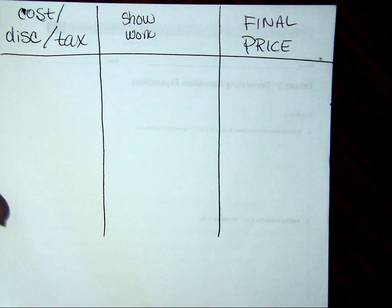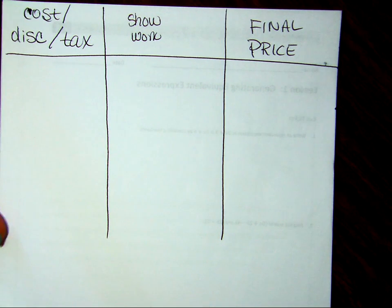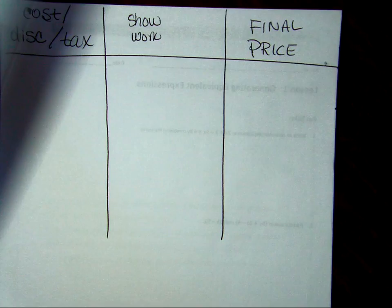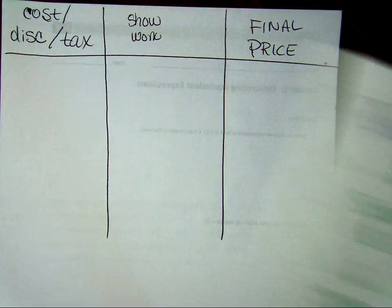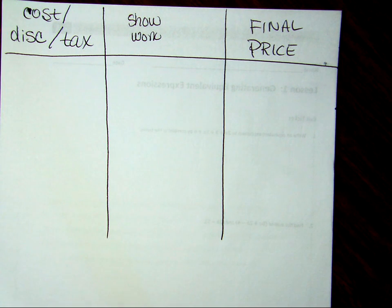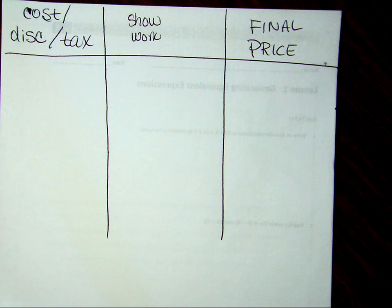I asked Third Hour to combine the two separate things that we just did — find a discount, find the tax — they could do them perfectly separate. But when I asked them to do it for the same problem, for some reason nobody could get the answer. So we're going to try to see if you guys are able to do that.